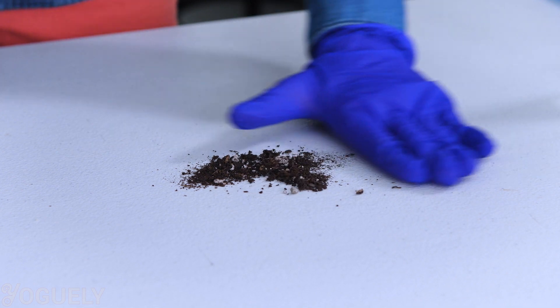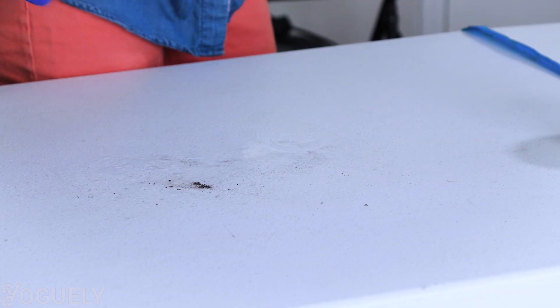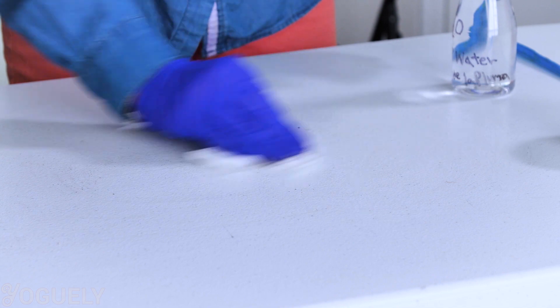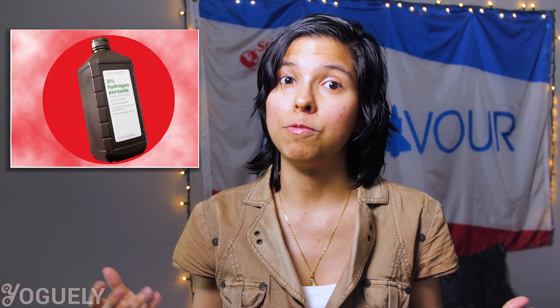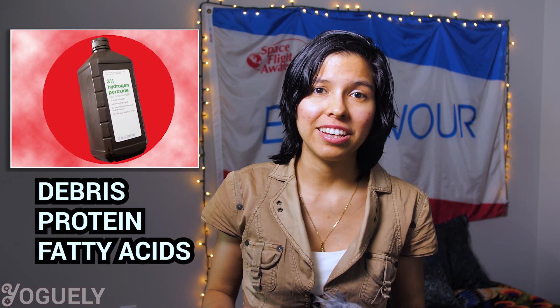You'll want to clean the surface with detergent or soap and water to remove as much dirt as possible before using hydrogen peroxide. In terms of specific materials it helps to remove, hydrogen peroxide is very helpful as a cleaning agent because it breaks up debris, protein, and fatty acids. Since it is a bleach, it is also effective in removing stains.